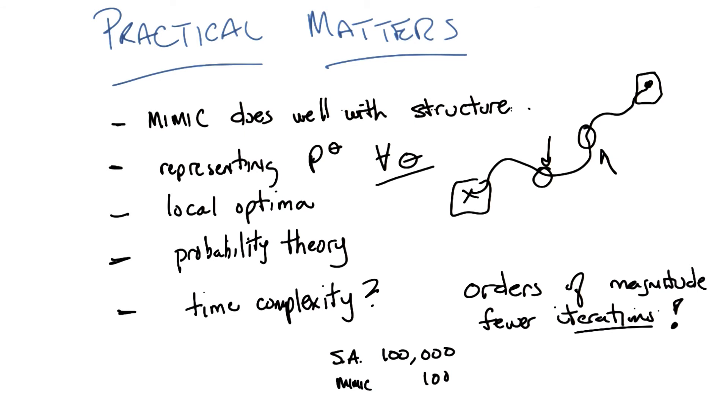So, when would you think that MIMIC would still be worth using in a case like that? Where we know that we can get to the answer, but simulated annealing will take orders of magnitude more iterations. MIMIC will take fewer iterations. So, when would it still be worth it to take the one with fewer iterations even though each iteration is expensive? Prim's algorithm, quadratic this, that, and the other. Oh yeah, I forgot about that part.